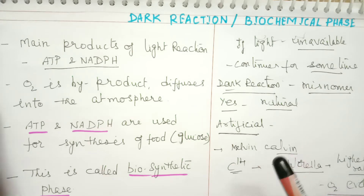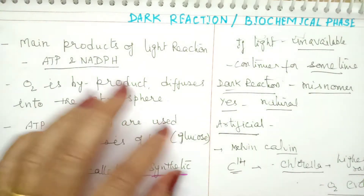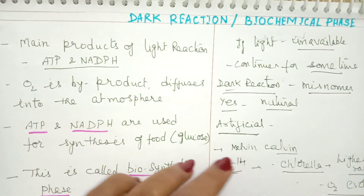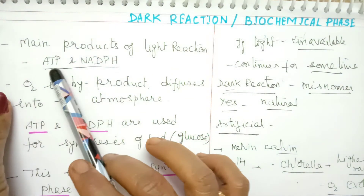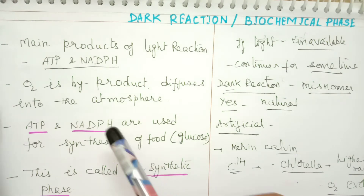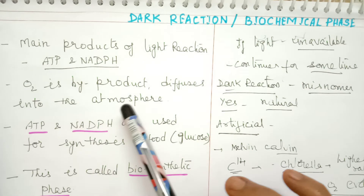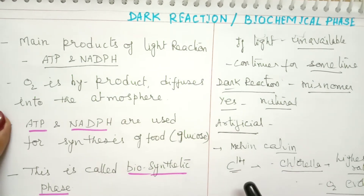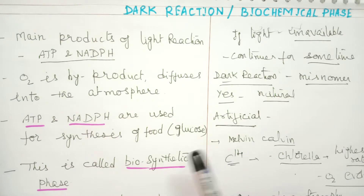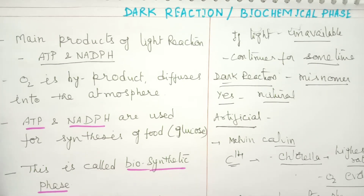So we will start with the biochemical phase or dark reaction. The main products of light reaction are ATP and NADPH2. Oxygen is only considered a byproduct and diffuses into the atmosphere. ATP and NADPH2 are used for the synthesis of glucose, which is the main food material. This phase is called the biosynthetic phase.